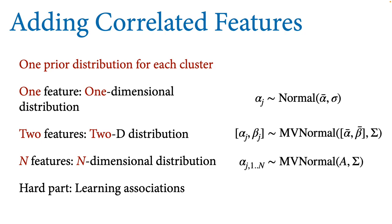In general, you're not limited to two features — you can go to n features and scale quite large. The hard part is learning associations. You typically need much more data to learn correlations well than to learn means or standard deviations. Means are easy, standard deviations are hard, and correlations are very hard — that's the heuristic. Nevertheless, it's worth trying. If you don't have a sufficient sample to learn them, you'll just get the prior back, so no harm done.